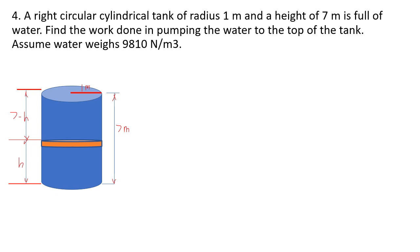A right circular cylindrical tank of radius 1 meter and height 7 meters is full of water. Find the work done in pumping the water to the top of the tank. Assume water weight density is 9,810 newtons per cubic meter. The tank has height 7 meters and radius 1 meter. The incremental element is dH, and the distance to pump is (7 minus H).